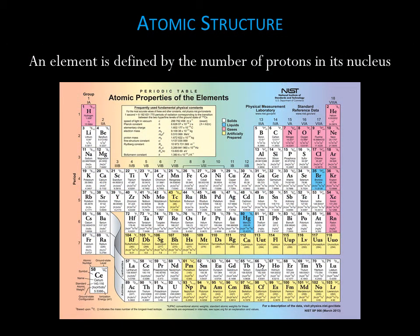An element is defined by the number of protons in its nucleus. Hydrogen, for example, always has one proton. Helium always has two protons, lithium three, and so on, all the way through the periodic table.